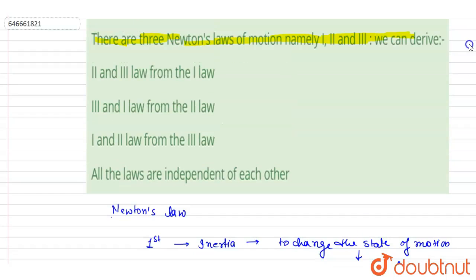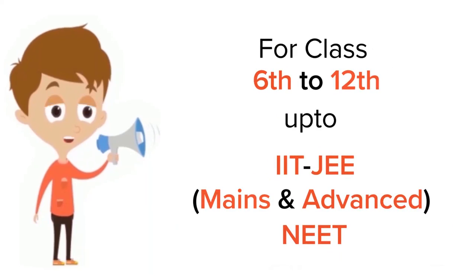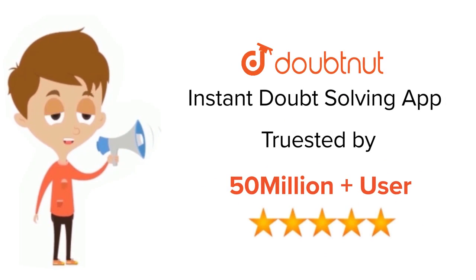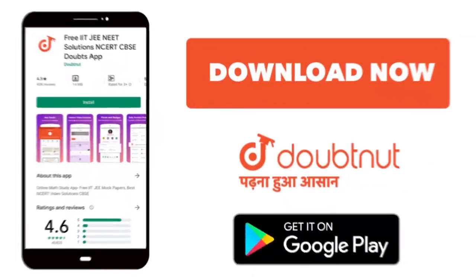So now you can see here the first and the third law can be understood by the second law. So B is the correct answer. Thank you! For class 6 to 12, IIT JEE and NEET level, trusted by more than 5 crore students, download Doubtnet app today.